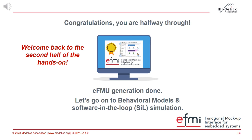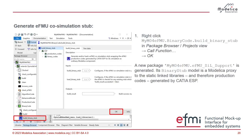You had your original Modelica model, simulated it, and generated an EFMU for the control part. Now we want to check that the production code we generated is really working — does it simulate the same? That's software-in-the-loop. We're not yet on target hardware, still in our desktop environment. If you're a DUMULAR user, you know that when you import an FMU, we create a little Modelica wrapper proxy that calls the FMU. Here we do something similar: we generate a proxy model that calls the binary code of the EFMU.